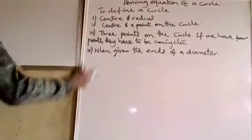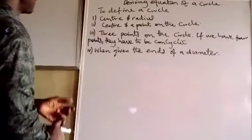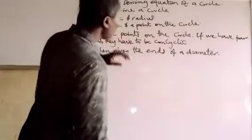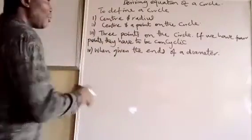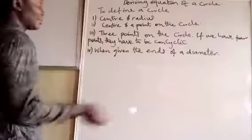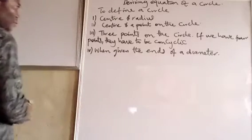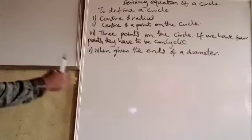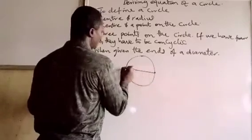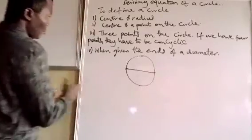Center and a point on the circle — we know what to do about that. We find the radius and then we find the equation of the circle. When we are given three points on the circle — if we have four points, they will be concyclic. All we need is three points. If we are given two points, it defines several circles. One point cannot work at all. We might also be given the ends of a diameter — that is, the two ends of the diameter.